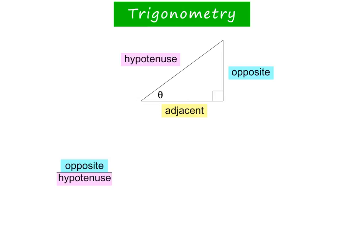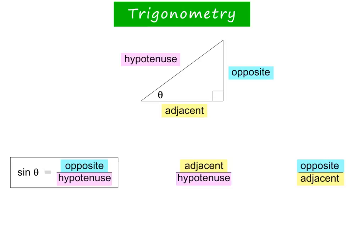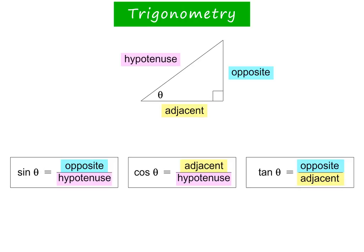There are three important ratios in this triangle. The first is opposite over hypotenuse. Next is adjacent over hypotenuse. And the third is opposite over adjacent. These three ratios have special names. The first one is called sine of theta, or just sine theta. The next ratio is called cosine of theta, or just cos theta. And the third ratio is called tangent of theta, or just tan theta.